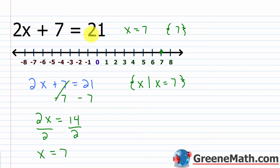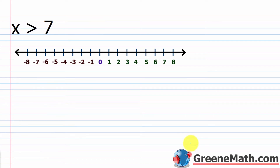In every situation, it's basically telling us that x needs to be replaced with 7 for us to get a true statement. 2 times 7 is 14, and 14 plus 7 is 21. If I replace x with anything else, I will not get a true statement — the equation will be false. Now let's look at an inequality.